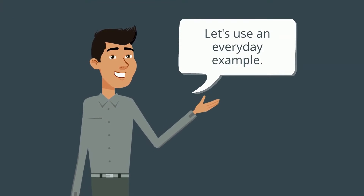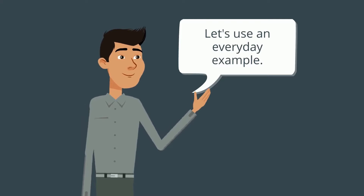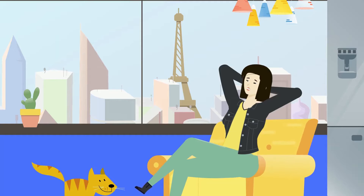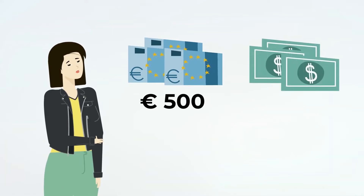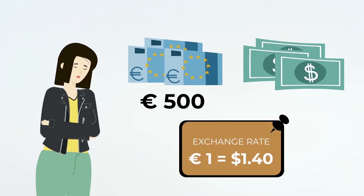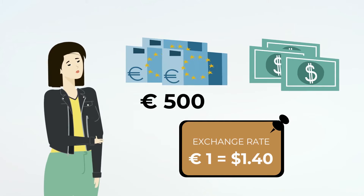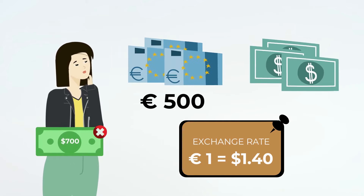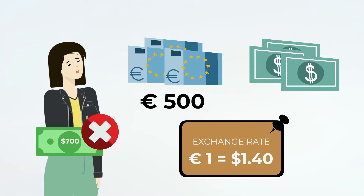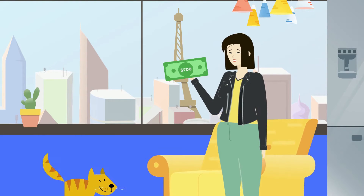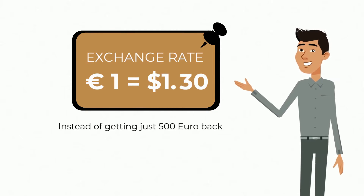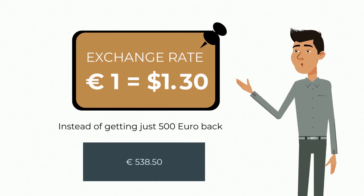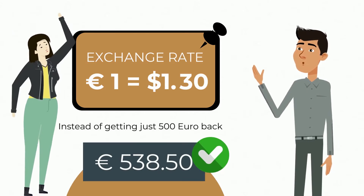Let's use an everyday example to explain how you could actually profit from this. Say you live in Europe and went on holiday to the United States. You change your 500 euros into US dollars at a rate of 1.4 dollars for every euro, giving you 700 US dollars, but you do not spend any money at all, so you still have 700 dollars when you come back. After the exchange rate moves from 1.4 to 1.3, instead of getting just 500 euros back, you actually get 538.5 euros.